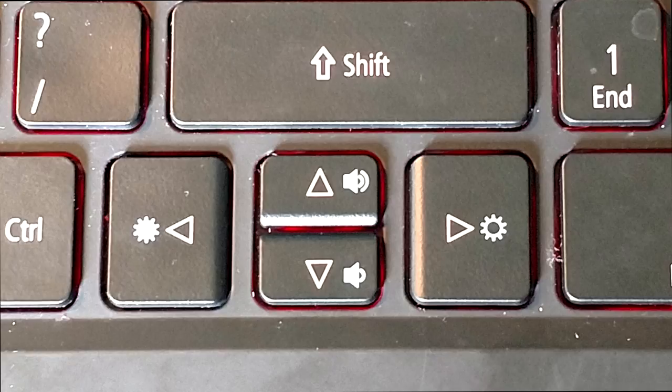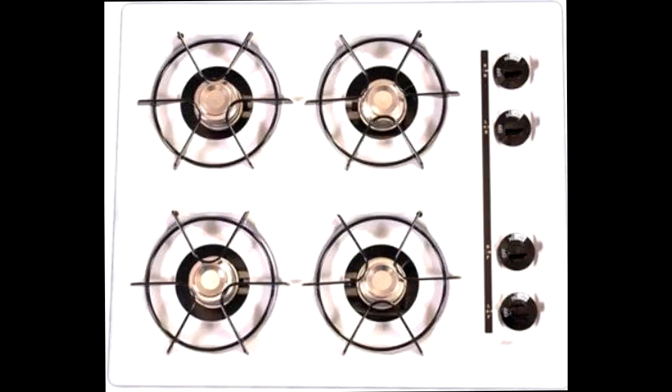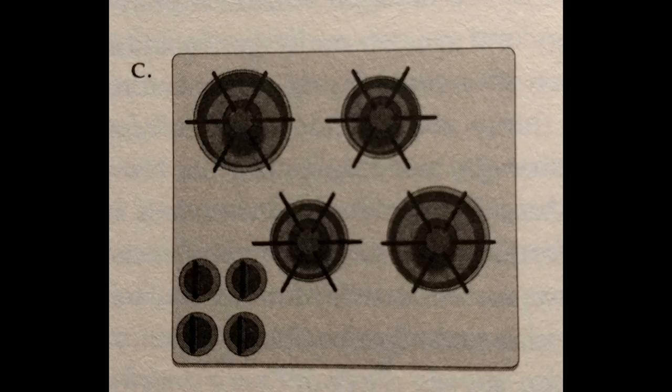Or if you look at a row of light switches, the far left switch should control the light that's farthest to the left from where you're standing. Or for another example, most stoves have four burners arranged in a square. The dials that control those burners should ideally also be arranged in a square, with each dial spatially corresponding to the burner that it's controlling — the top left dial controlling the top left burner, and so on.